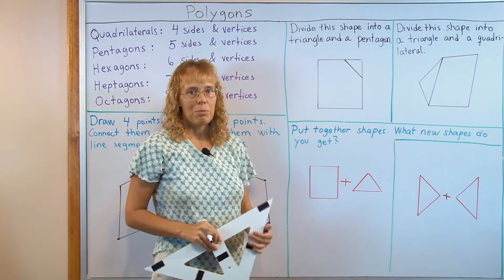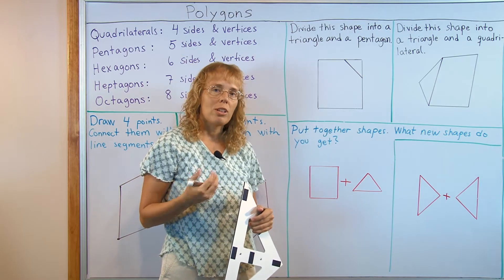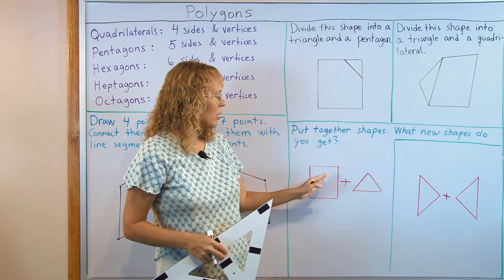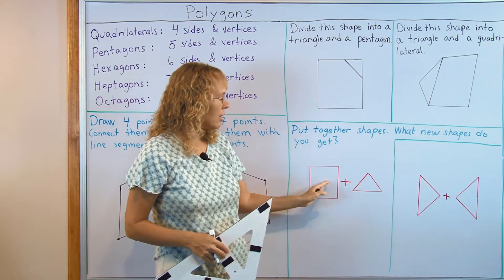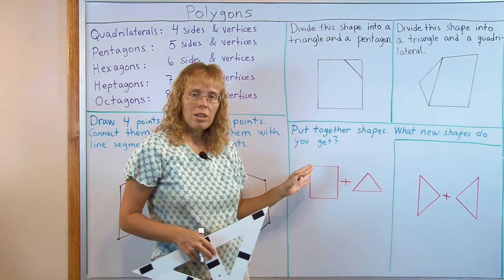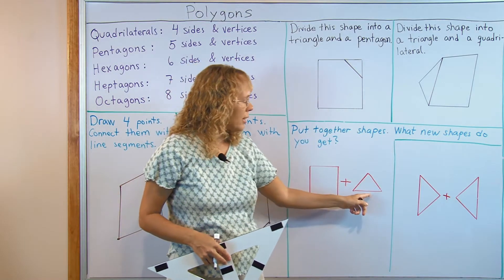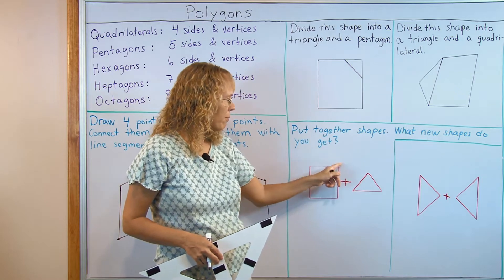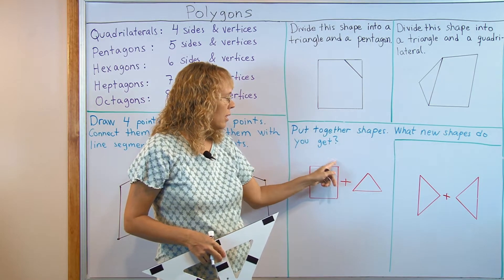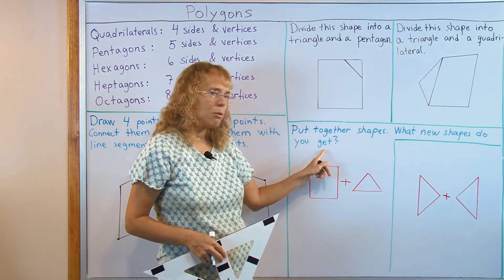And then we also want to put shapes together to form new polygons. For example you might have this and this, a rectangle and a triangle, and what new polygon will you get if you place this over here? I think I would get the pentagon.